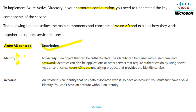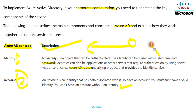The next concept is account. An account is an identity that has data associated with it. There is no big difference between account and identity — if there is an identity, there will be an account with data associated with it. To have an account you must first have a valid identity, because that account needs a username and password, which comes from the identity.